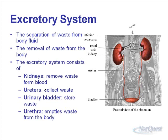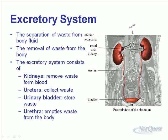The four major parts are the kidneys, the ureters, the urinary bladder, and the urethra. Waste is removed by the kidneys; the ureters collect the waste and carry it to the bladder; and the urethra empties the waste from the body. In this picture we can't see the urethra — it would actually be behind the pelvis. Here are the pelvic bones, and behind them going down would be the rest of the bladder and the urethra.